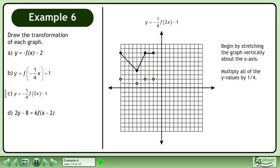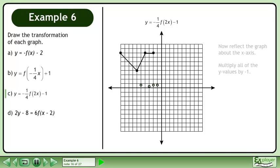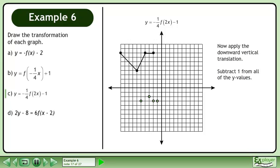Begin by stretching the graph vertically about the x-axis — multiply all of the y-values by 1 over 4. Next, stretch the graph horizontally about the y-axis — multiply all of the x-values by 1 half. Now reflect the graph about the x-axis — multiply all of the y-values by negative 1. Now apply the downward vertical translation — subtract 1 from all of the y-values.